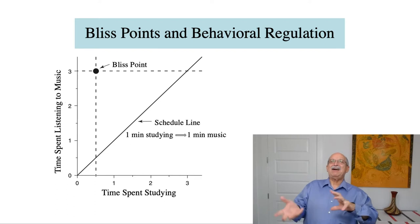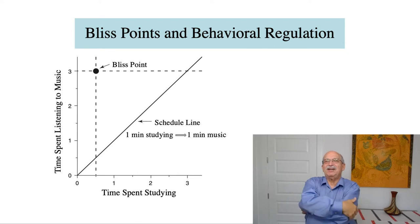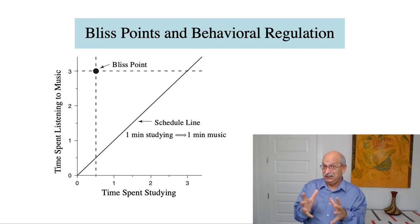Well, how the teenager is going to respond to this constraint depends on trade-offs. So if listening to music is really important, then she's going to travel up the schedule line until it intersects the level of music that she prefers at the bliss point, and then she'll get to listen to as much music as she ordinarily likes. But notice that this is at the cost of having to increase her studying time substantially.